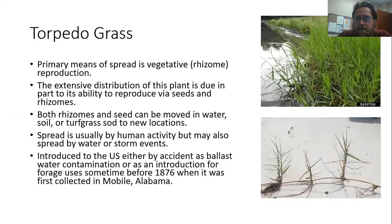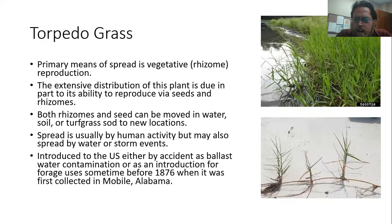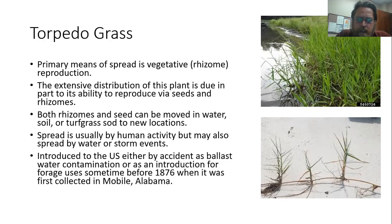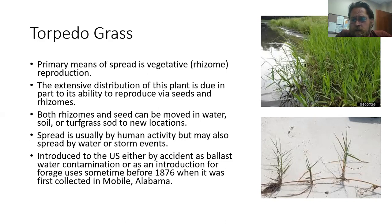Unfortunately, there are not really a lot of effective controls for torpedo grass. Non-selective herbicides like glyphosate will give some burndown and kill the top foliage, but it will come back from the rhizome. In raised beds, avoid excessive watering since torpedo grass thrives in those conditions. You can physically remove the rhizome, but if you leave sections it will come back. A combination of physical removal and herbicide is really the best we can do.